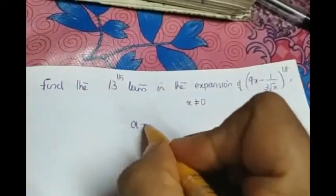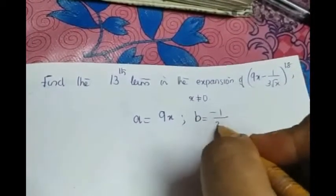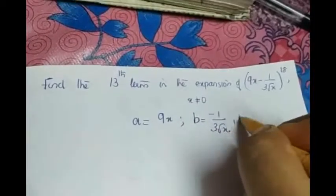So write the value of a. What is a? a is the first term which is 9x. b is the second term together with the sign minus 1/(3√x), n is equal to 18.